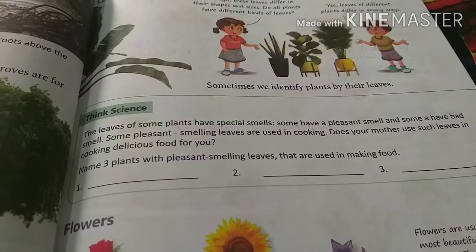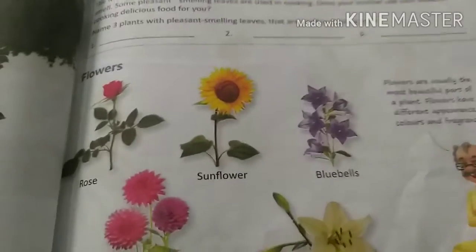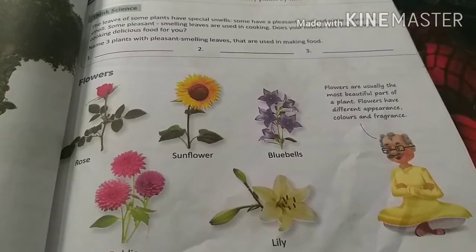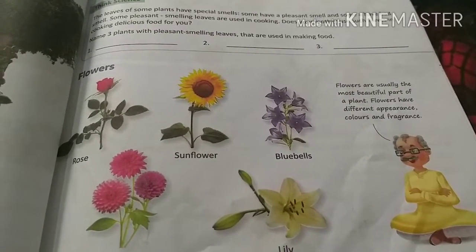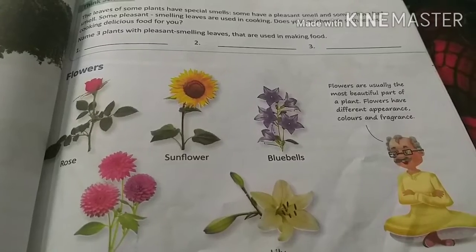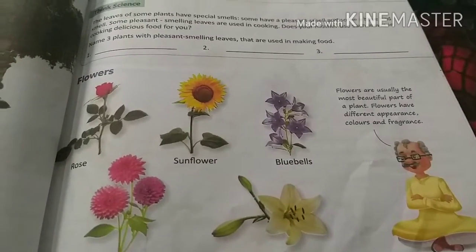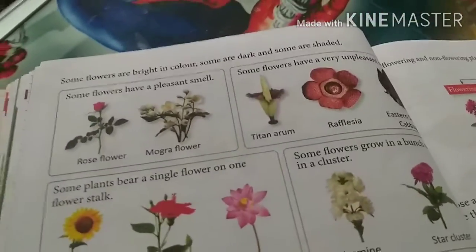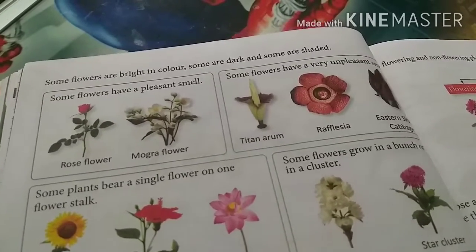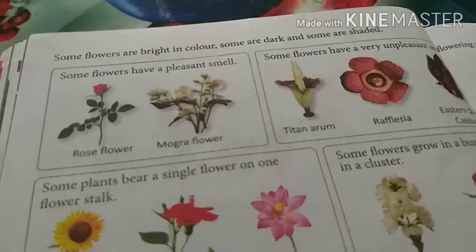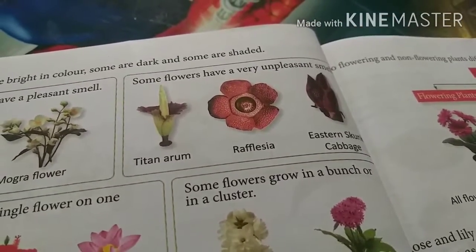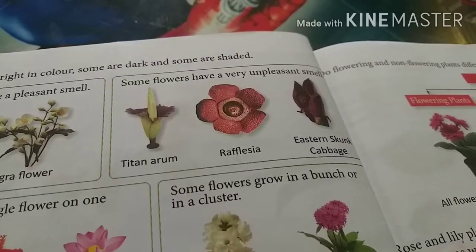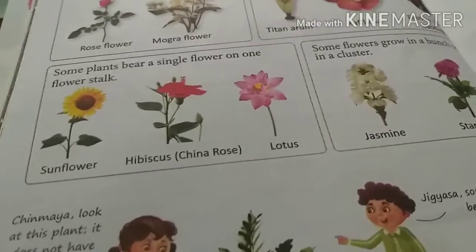Flowers have different colors, different size, shape, and smell. Some flowers are big and some are small. Fragrance means smell. Some flowers have a very pleasant smell — a very good smell — such as rose and mogra. Some have a bad smell, such as titan arum, rafflesia, and eastern skunk cabbage.